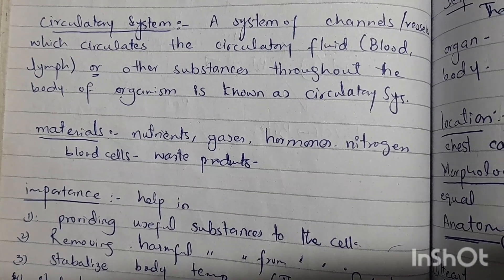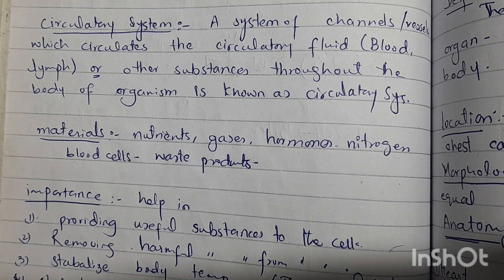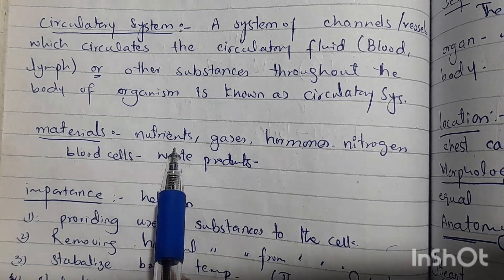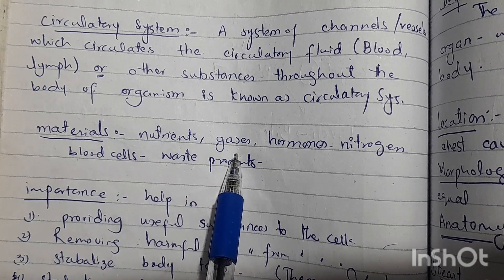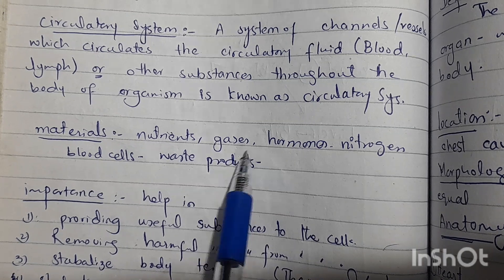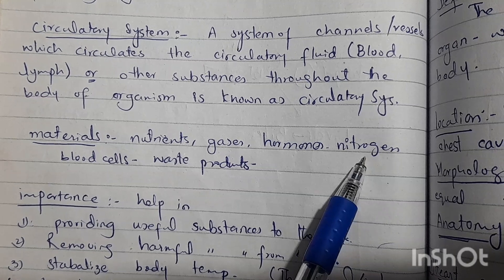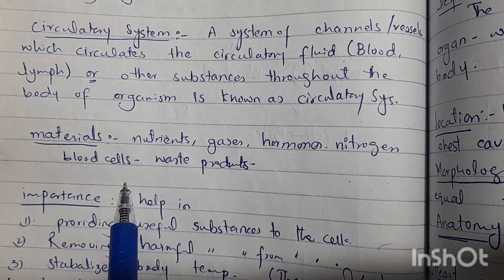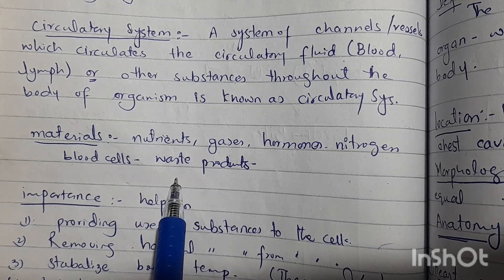Now let's talk about what the circulatory system — meaning blood or lymph — carries in our body. It carries a mixture of nutrients such as glucose, amino acids, and fats; gases like carbon dioxide and oxygen; hormones; nitrogen-containing substances like ammonia, urea, and uric acid; blood cells such as RBCs, WBCs, and platelets. Waste materials produced in our body are also transported through blood and lymph.